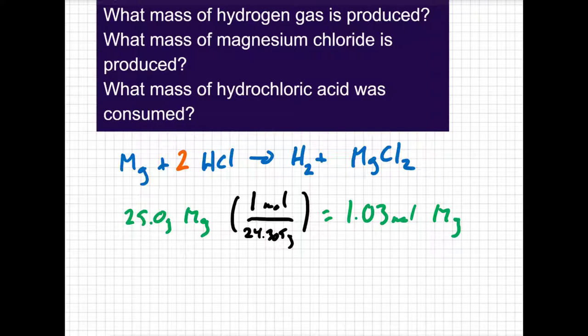Now I can start predicting products. The first product that's asked for is the mass of hydrogen gas. I have 1.03 moles of magnesium, and if I look at my balanced equation, my ratio between the hydrogen and the magnesium is a one-to-one ratio. There's one H2 for every one magnesium, so that means there's 1.03 moles of hydrogen gas produced.